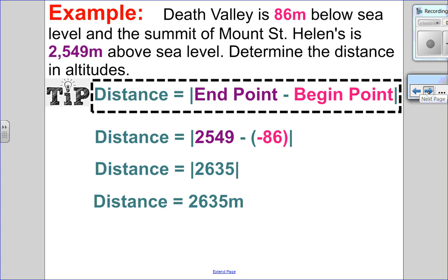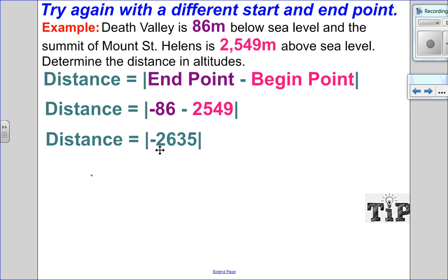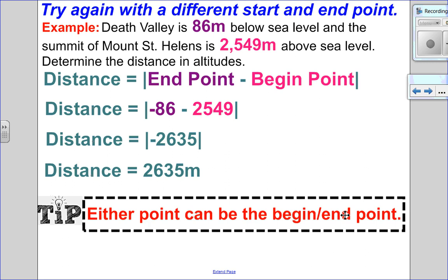Now, would it matter which one I call the end point and which one I call the beginning point? I want to test that by switching it around. So I want to try it with a different start and end point. So this time I'll call my end point the Death Valley, and the beginning point Mount St. Helens, and see if we end up with the same difference. So the distance equals the absolute value of the end point. Death Valley is below sea level, so it's negative 86, subtract the beginning point, which is 2,549. So subtracting those, I end up with negative 2,635. And the absolute value of a negative is a positive, of course, with units. So my tip for you is either point can be the beginning or the end point. You see that it doesn't matter.